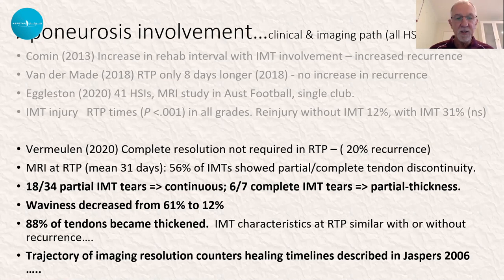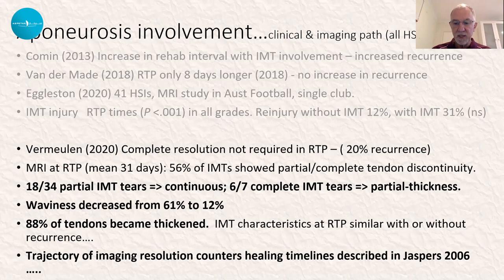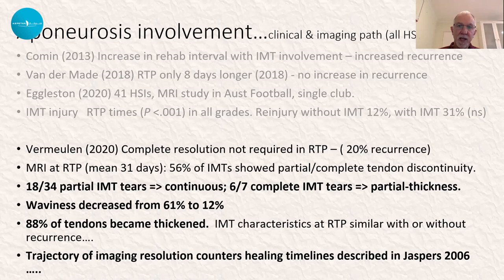They showed a loss of waviness — the degree of redundancy — from 61% of the original partial and complete tears down to 12%. Notably, 88% of tears involving the intramuscular tendon had become thickened at return to play. This mirrors discussions with physicians and radiologists: at 31 days, and most people will say six to eight weeks, we're starting to see pretty good healing and loss of any intramuscular tendon healing signal, and we're starting to feel more confident about that tissue being able to bear load.